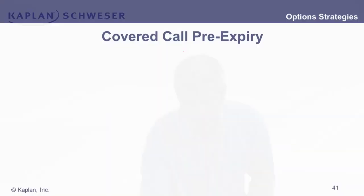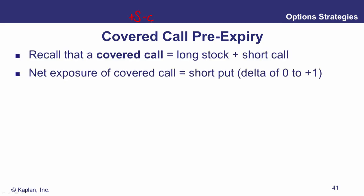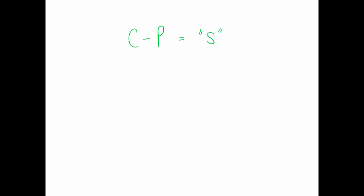Similarly, a covered call — long the underlying and selling a call against it. Through put call parity, rearranging S minus C gives minus P. The covered call is synthesizing a short put position — bottom right of the options diamond.